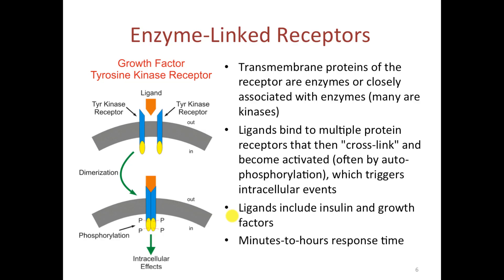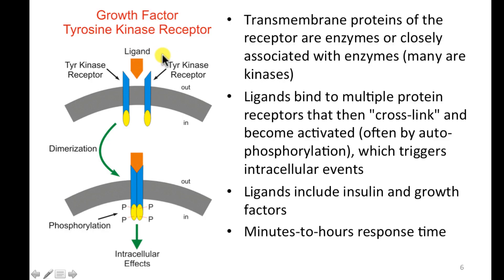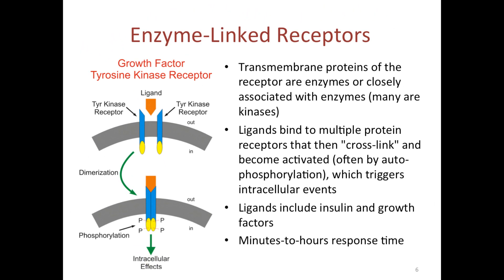A third type of receptor is what we call enzyme-linked receptors. The example here is a growth factor tyrosine kinase receptor. When a ligand — whether it's a growth factor or insulin — binds to the tyrosine kinase receptor, the receptor undergoes dimerization, where the two sides come together. This causes phosphorylation of the beta subunit inside the membrane, which then leads to intracellular effects. This type of receptor usually requires minutes to hours for its response, making it far slower than ligand-gated channels or G-protein-coupled receptors.